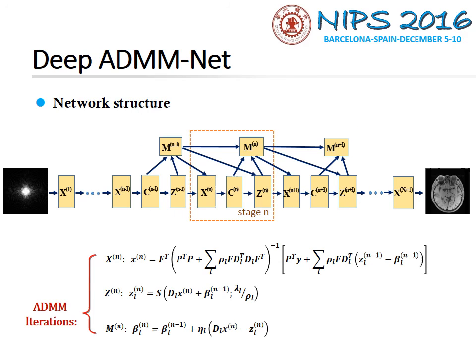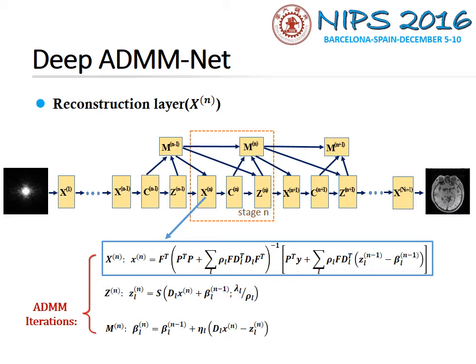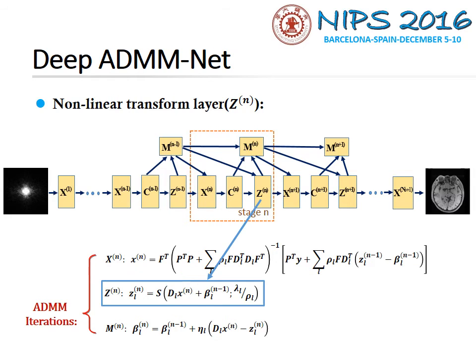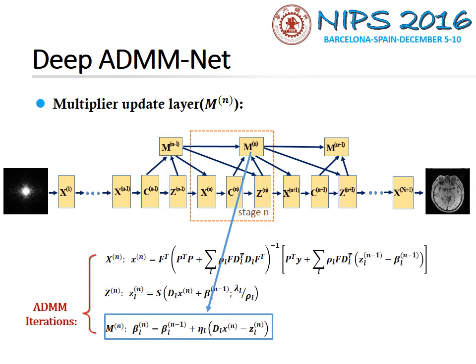The ADM-Net is defined over a data flow graph. Each stage has four layers: a reconstruction layer X, a convolution layer C, a nonlinear transform layer Z, and a multiplier update layer M.